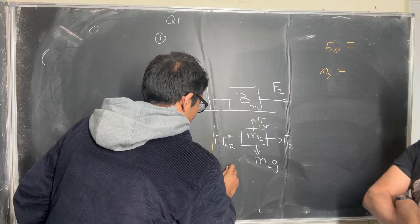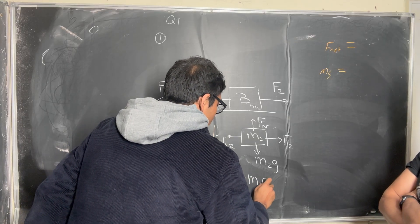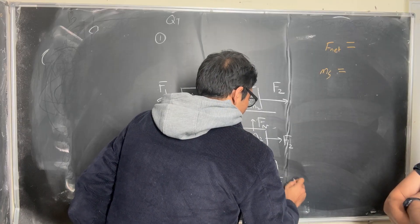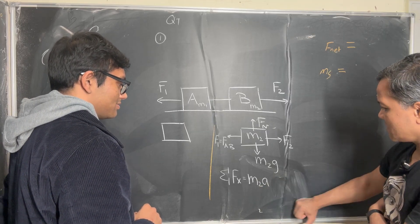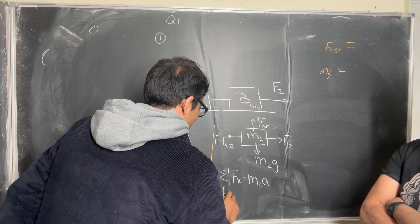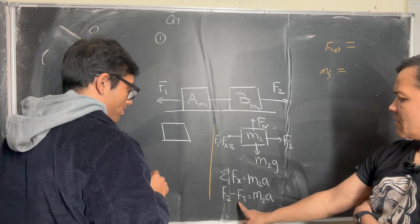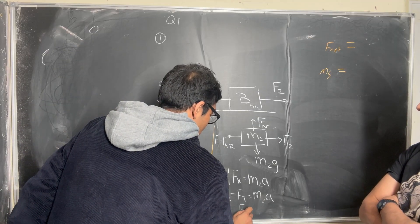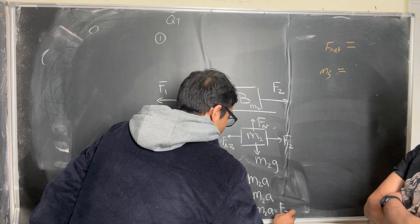Can you write Newton's second law here? It's accelerating only in the x-direction, so M2·A = F2 minus Ft. You can write F2 minus Ft equals M2·A. Now isolate Ft: F2 minus M2·A equals Ft.